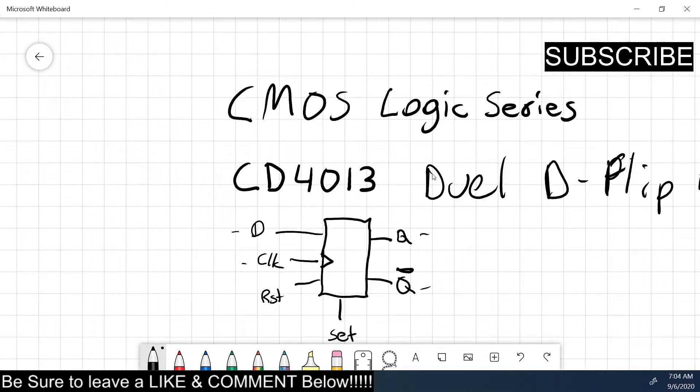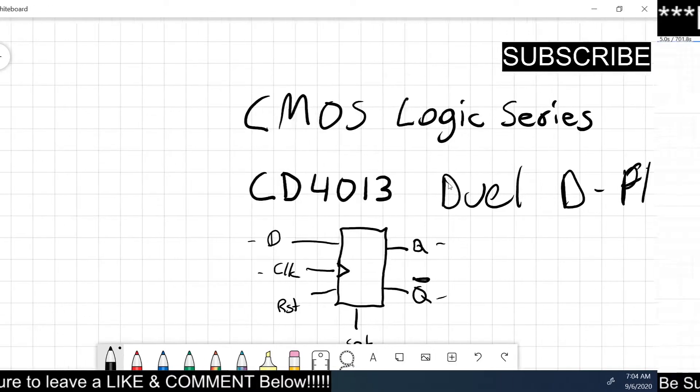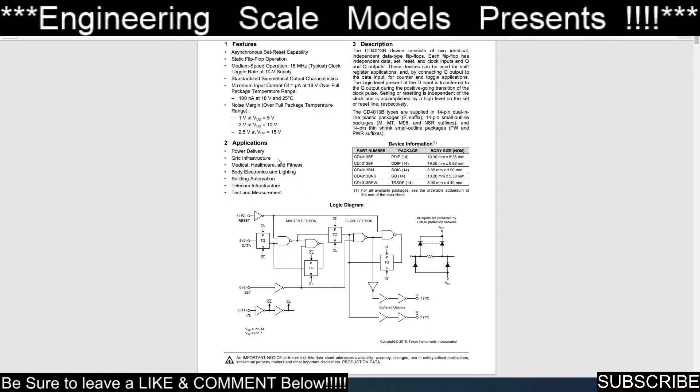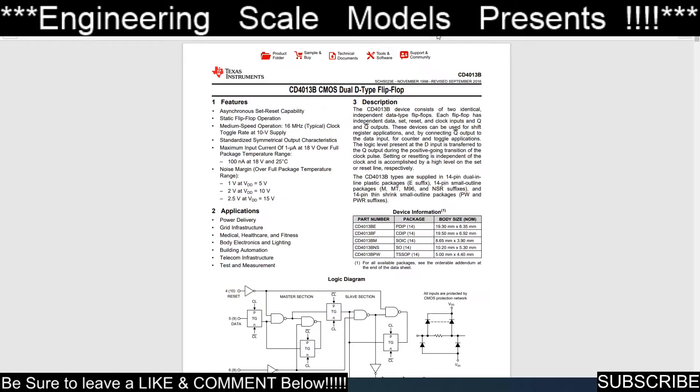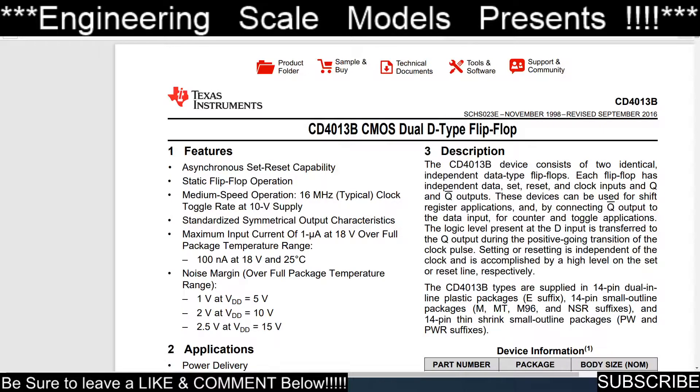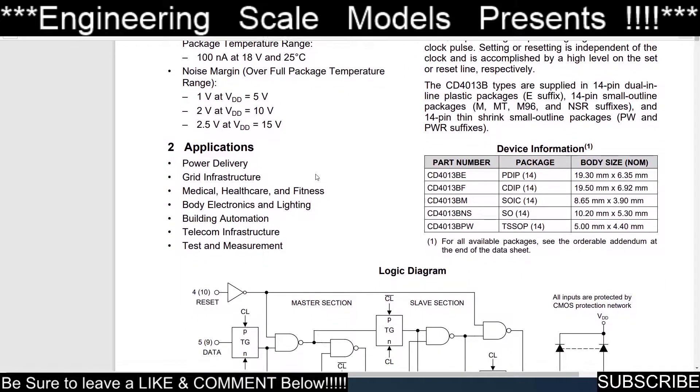Let's take a look at the data sheet. Here's the data sheet. This is the 4013B, it's a dual D type flip-flop. It contains two identical independent D type flip-flops. Each flip-flop has an independent data, set, reset, and clock inputs, and the Q and the inverse of Q. They can be used for shift register applications.